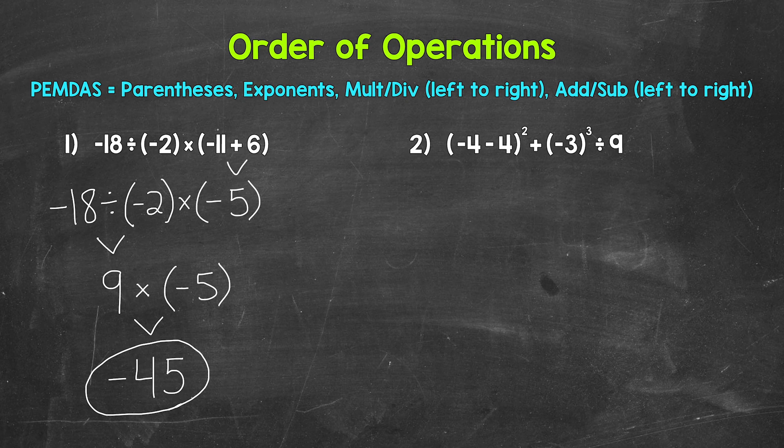Let's move on to number 2, where we have in parentheses negative 4 minus 4, end parentheses, and we are squaring what we get within those parentheses, plus negative 3 cubed divided by 9. Let's work through the order of operations. Do we have anything to work through within parentheses? Yes, we have negative 4 minus 4. So let's start there.